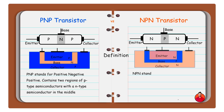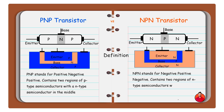In NPN transistor, NPN stands for negative-positive-negative. It contains two regions of N-type semiconductors with a P-type semiconductor in the middle.